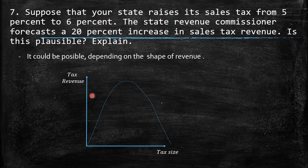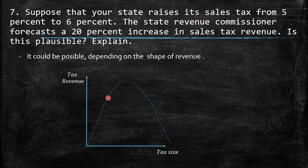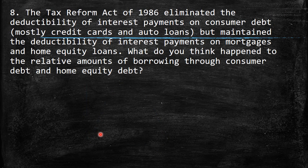Imagine that 5% is at one point and 6% is at another point on this curve. Definitely, if we consider the slope of this curve, we can figure out that this change from 5% to 6% could represent an increase of 20%. For example, this could go from $100 to $120. So it could be the case — though it won't be if we are past the maximum. Definitely, it depends on which part of this curve we are. But definitely, this is plausible.